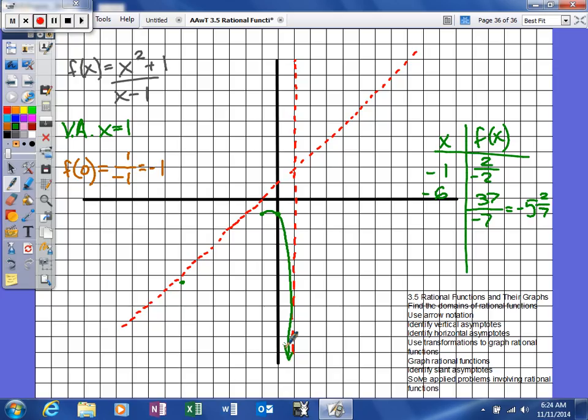And what that means is, as x goes to positive infinity, you should approach that asymptote from one side or the other. So what our graph is going to look like on this side is going to look a little bit like that.